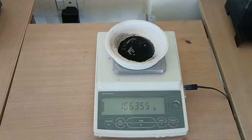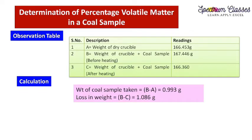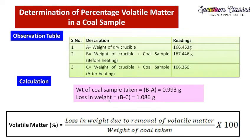We are going to put this value in the table. The readings observed from the experiment are in this table, and from there we are going to calculate the weight of coal sample taken and the loss in weight. Here you can see the loss in weight is more than the weight of the sample — how is that possible? Don't you think that is a very strange thing?